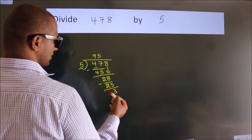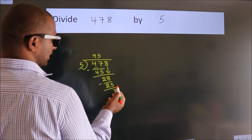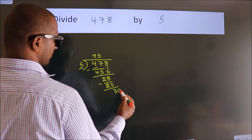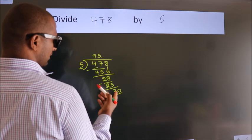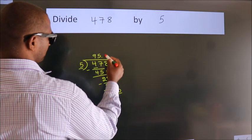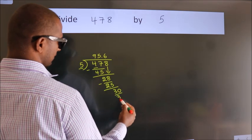After this, no more numbers to bring it down. So what we do is we put dot take 0. So 30. When do we get 30? In 5 table. 5, 6, 30.